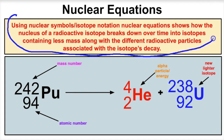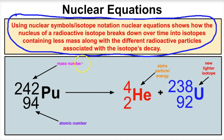We talked about radioactivity in an earlier video — with radioactive isotopes, the nucleus of those atoms is going to lose some of their mass to energy over time. A nuclear equation shows us how the nucleus of that radioactive isotope is going to break down. For example, here we have a radioactive isotope of plutonium. The mass number is always in the top left corner and the atomic number is always in the bottom left corner of a nuclear symbol.